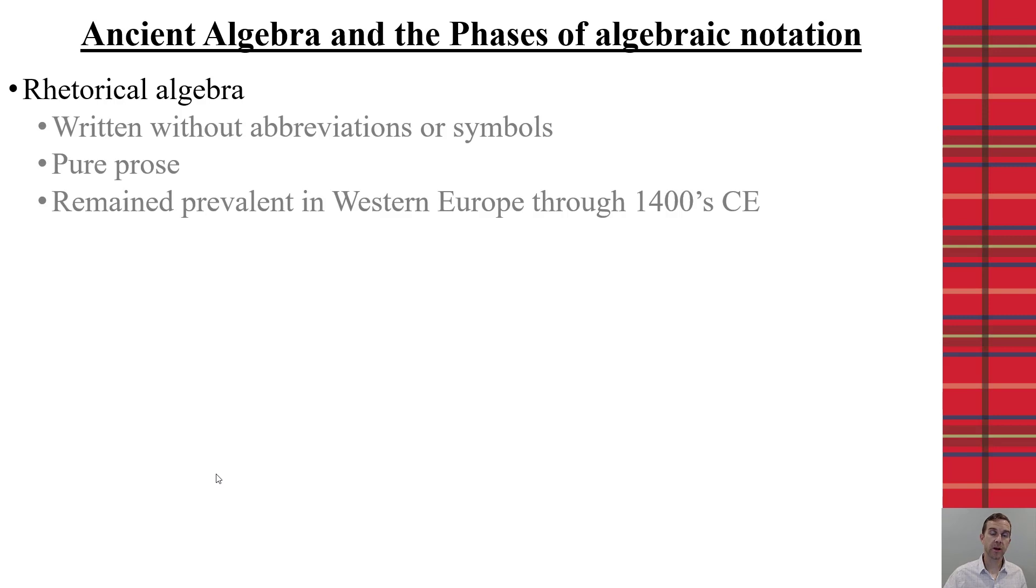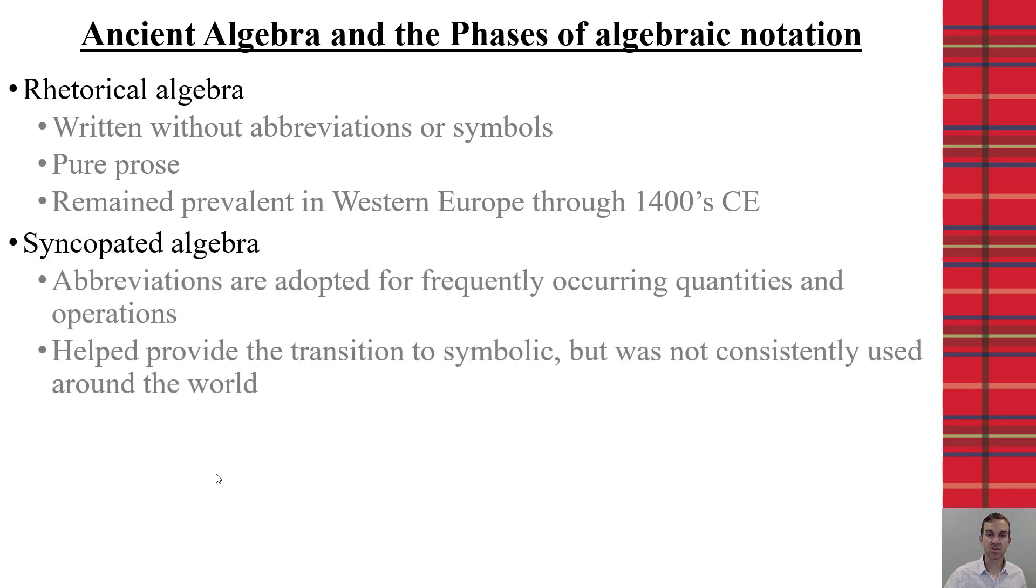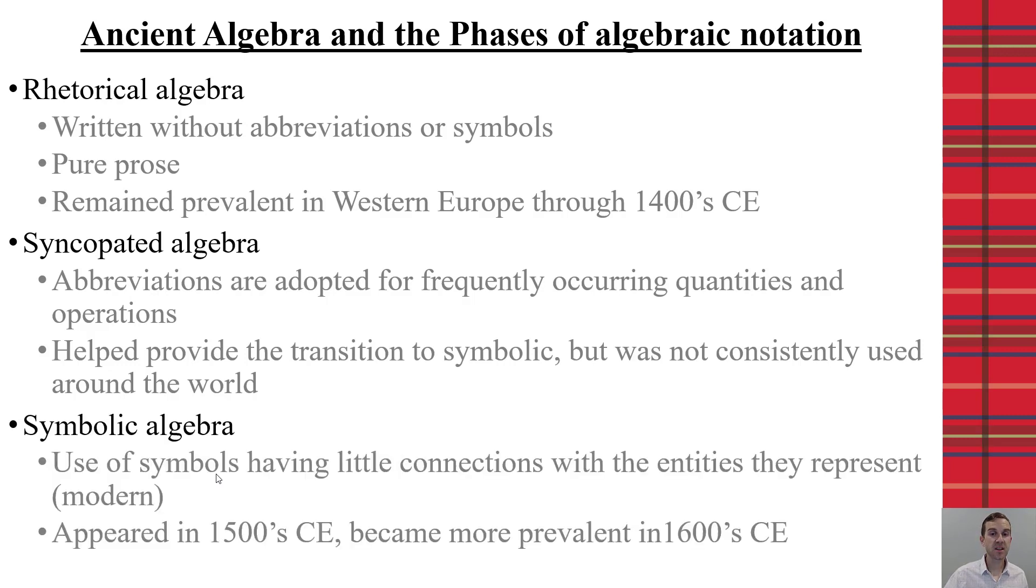Now, at the same time that rhetorical algebra is being used, though, there are places that syncopated algebra starts to become more common. And this happens with the Greeks at one point as well. Here, we start to use some abbreviations that help to set up the idea of connections to use an abbreviation for quantity and operation. And this is what helps transition us to symbolic algebra. But it was not consistent when we look at time periods or across the world. However, as we get into the 1500s and 1600s, symbolic algebra starts to become more prevalent. Here, we're using symbols and notations that don't have connections directly to the entities, but they do help us to solve the problems. And then we can tie them back to what was the original situation in which we're dealing with. This is the type of algebra that we now deal with today.